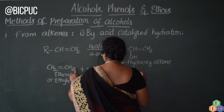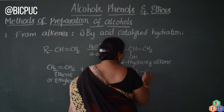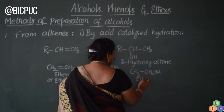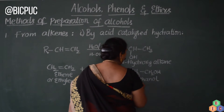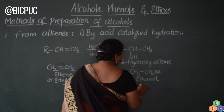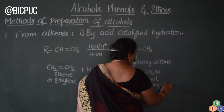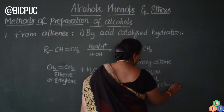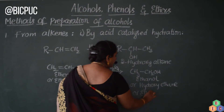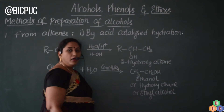So what is the product? One hydrogen attaches here and OH attaches here. Therefore, the product is CH3-CH2-OH. The name of this compound is ethanol or hydroxyethane — both are IUPAC nomenclature. We can also call this ethyl alcohol.